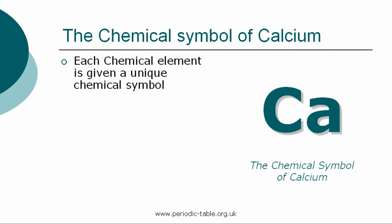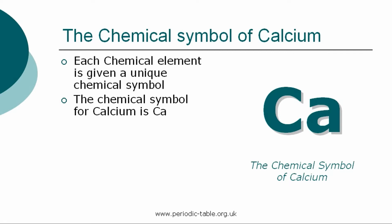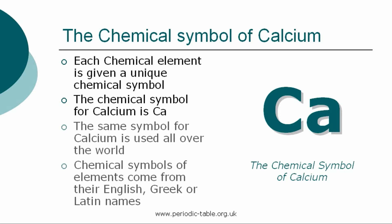Each chemical element is given a unique chemical symbol, which is used all over the world. The chemical symbol for calcium is Ca. The chemical symbols of elements come from their English, Greek, or Latin names.